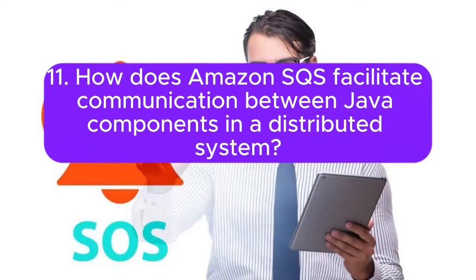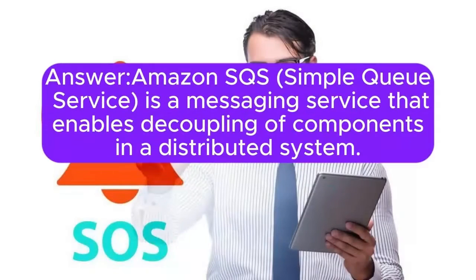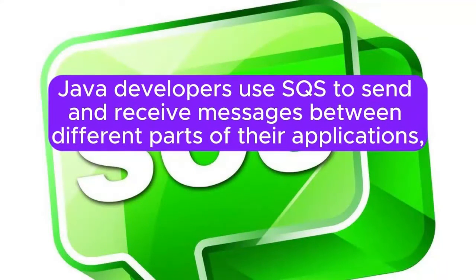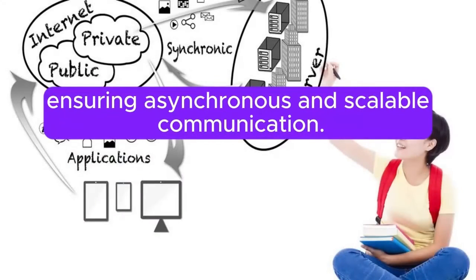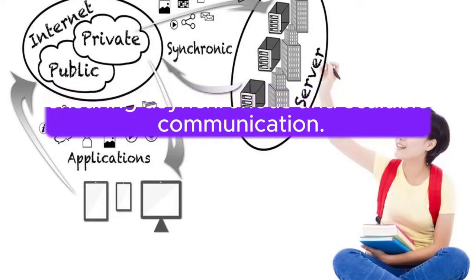Question 11: How does Amazon SQS facilitate communication between Java components in a distributed system? Amazon SQS Simple Queue Service is a messaging service that enables decoupling of components in a distributed system. Java developers use SQS to send and receive messages between different parts of their applications, ensuring asynchronous and scalable communication.